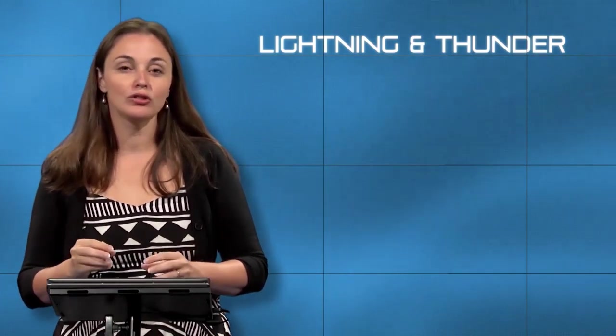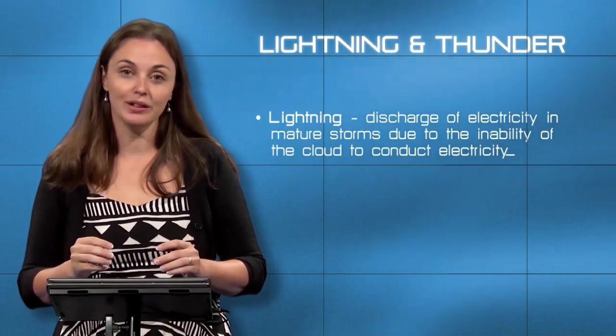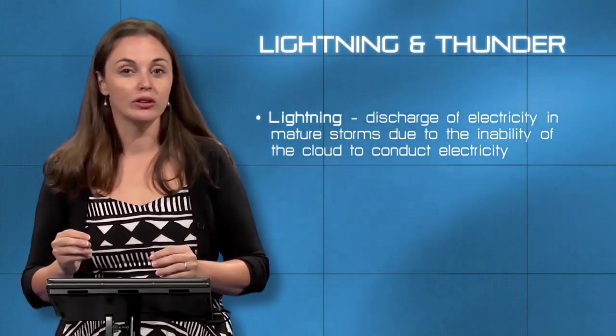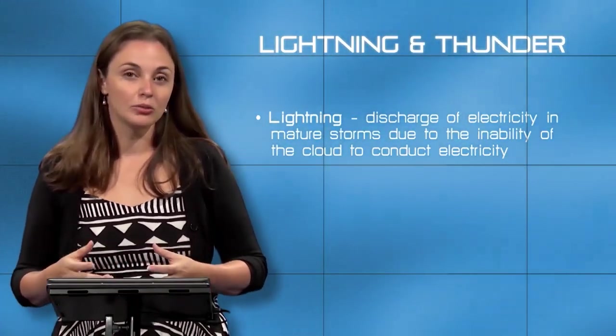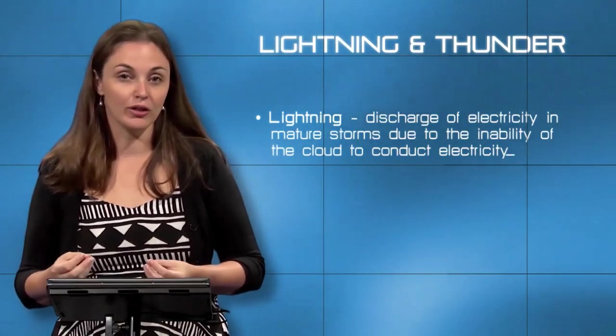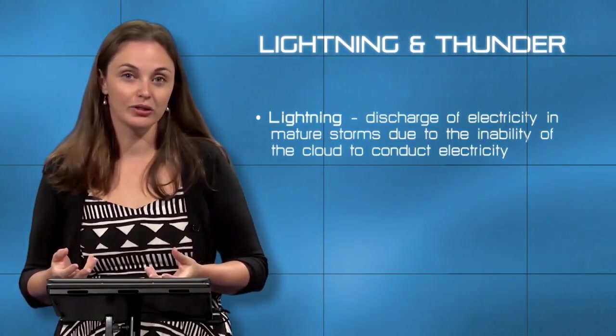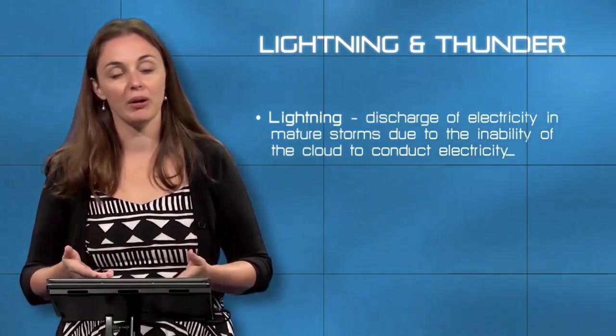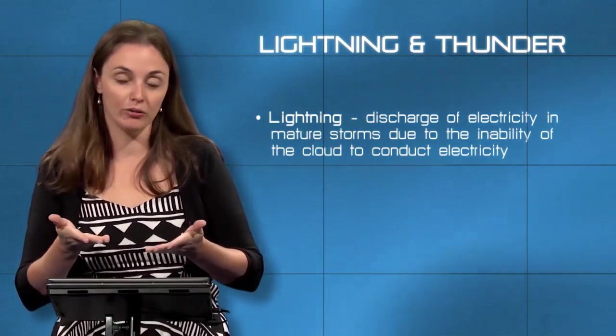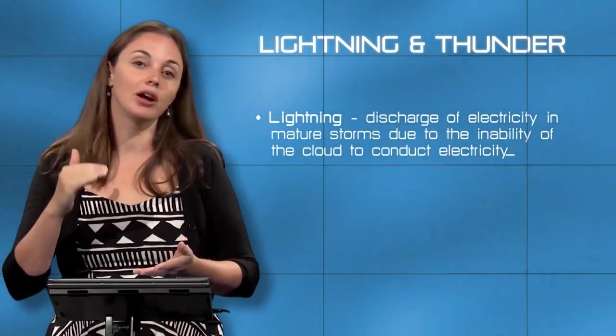Before we get into cold fronts and single-cell versus multi-cell thunderstorms, let's talk about what lightning and thunder actually are. Lightning is a discharge of electricity from typically one point in the cloud to a different point in the cloud. Only a fairly small minority of all lightning actually makes contact with the ground surface. Air and moisture in the atmosphere are just really terrible conductors of electricity.